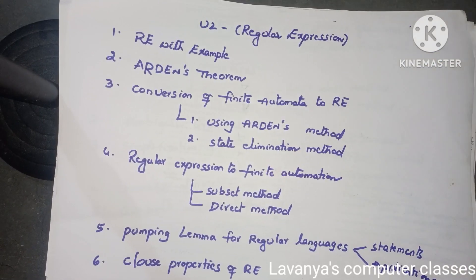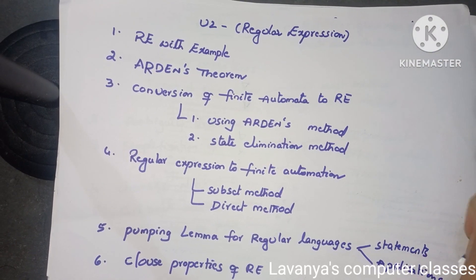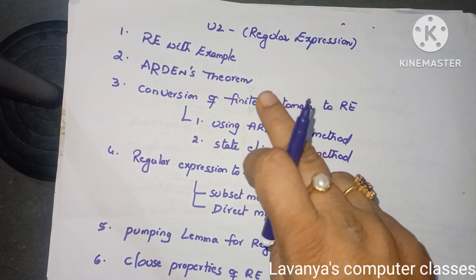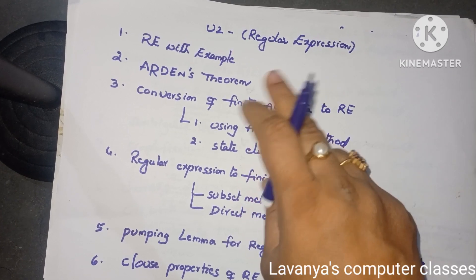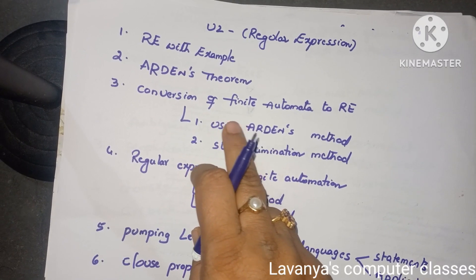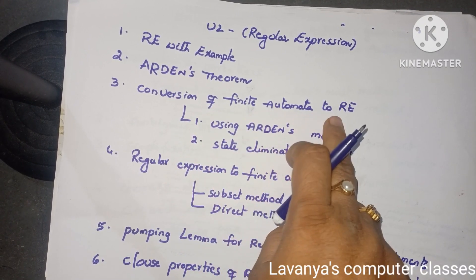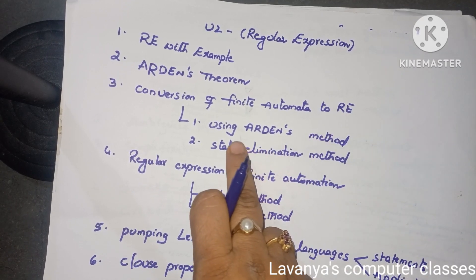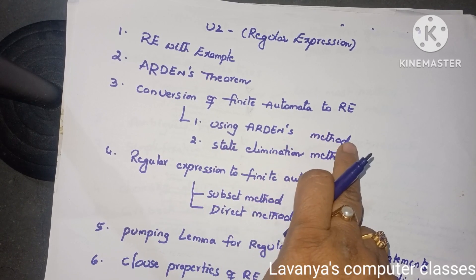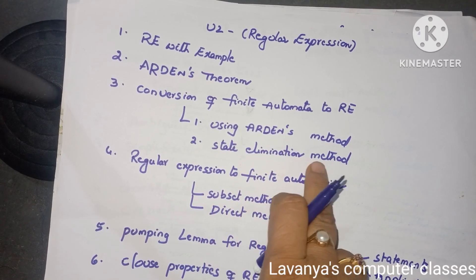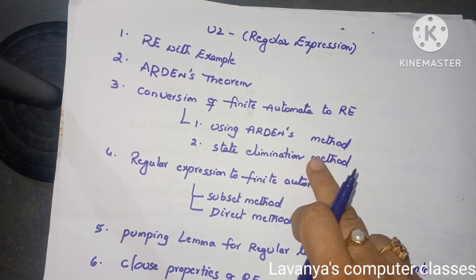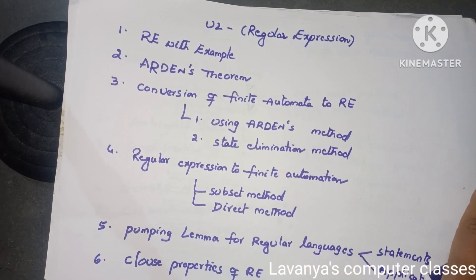In the next video I will post the repeated old question papers also. This is unit two — the unit is regular expressions. What is RE, define regular expression with example. Second, what is Arden's theorem — very important question. Then, conversion of finite automata to regular expression using either Arden's method or state elimination method. If the question specifies state elimination method, use only that.